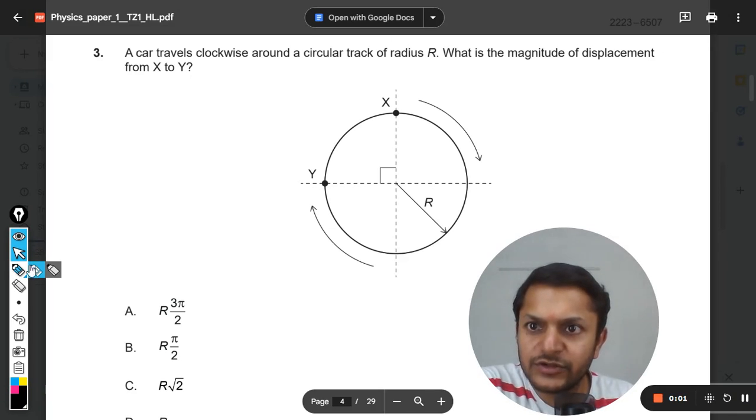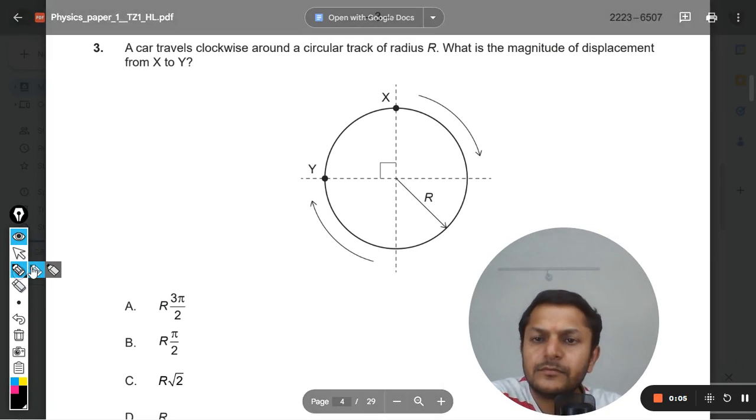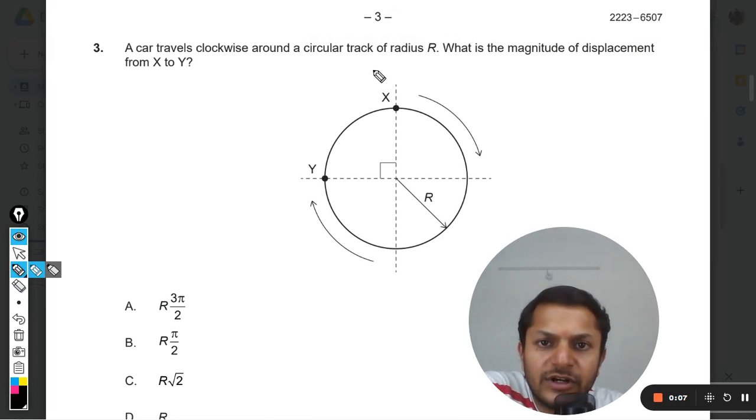Students, let us see what is there in this question. A car travels clockwise around a circular track of radius R. What is the magnitude of displacement from X to Y? So the initial position is this and it goes around the circle like this.